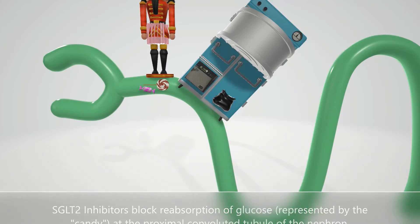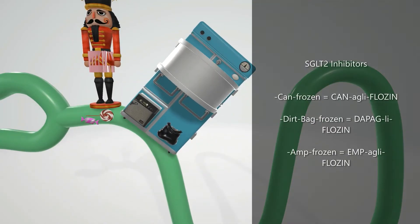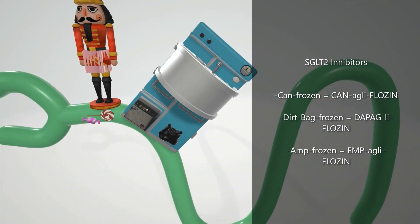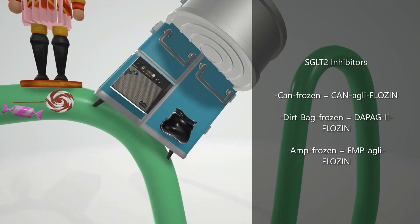The SGLT2 inhibitors are represented by frozen medications in a freezer: canagliflozin, dapagliflozin, and empagliflozin. To remember them: the can in the freezer is for canagliflozin, the dirty bag is for dapagliflozin, and the guitar amp in the freezer is for empagliflozin.